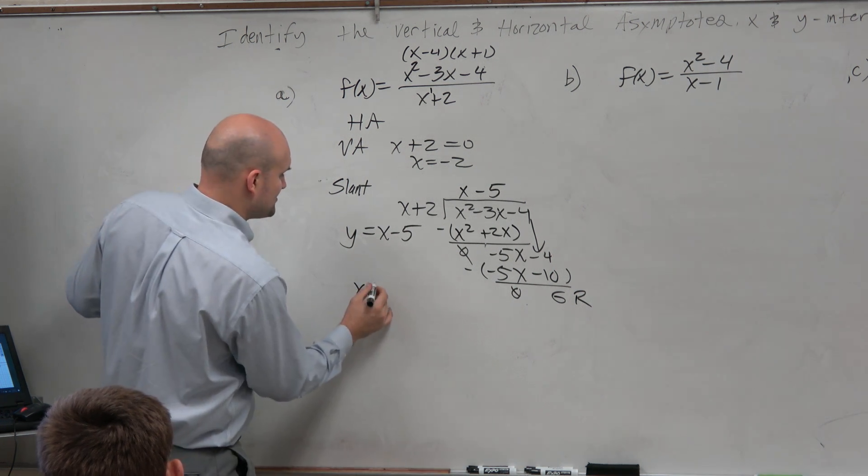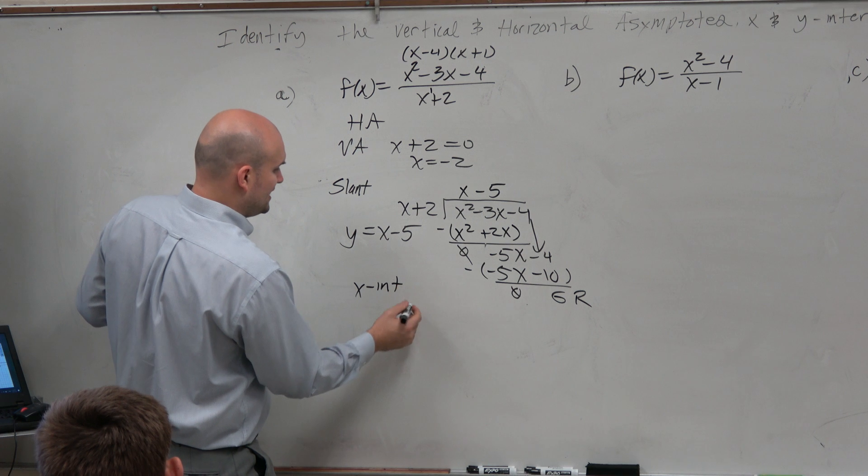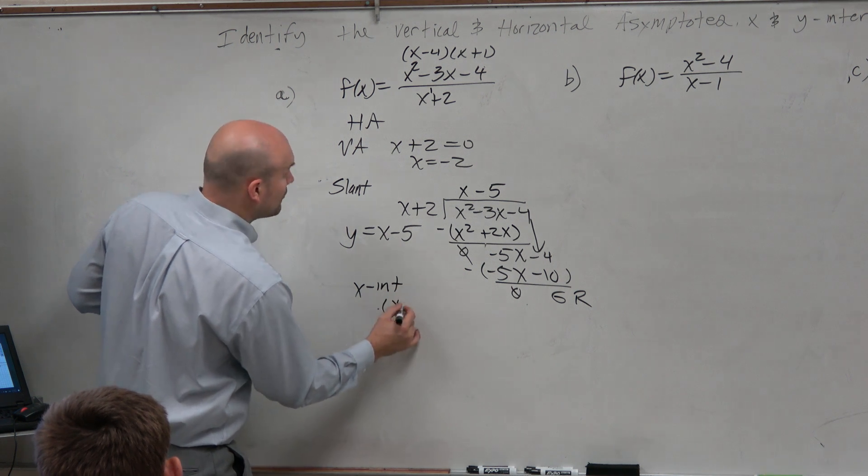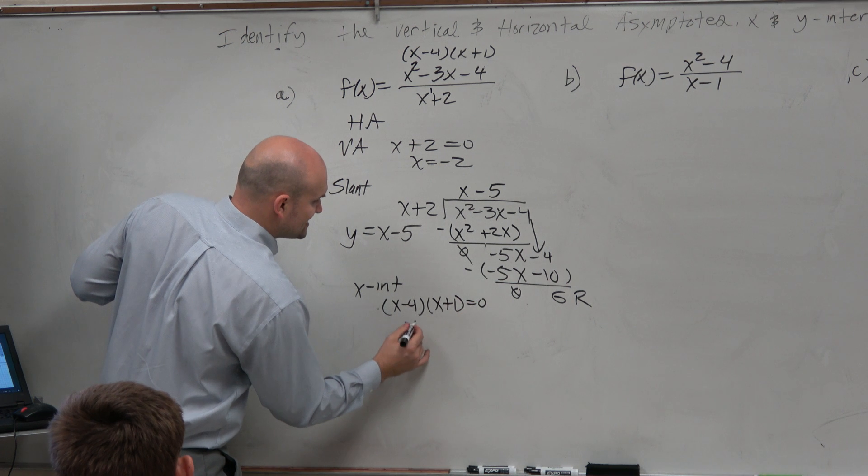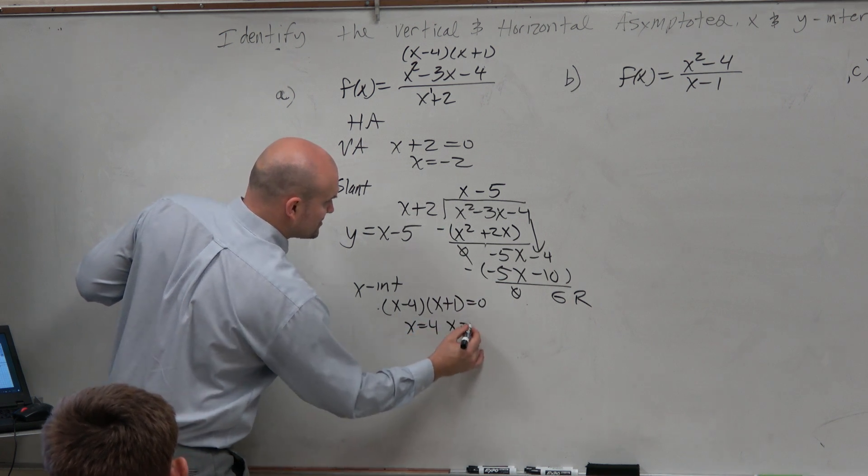Now, let's find the x-intercept really quick. That is just the numerator. I'll write the factored form equal to 0. So that's x equals 4 and x equals negative 1.